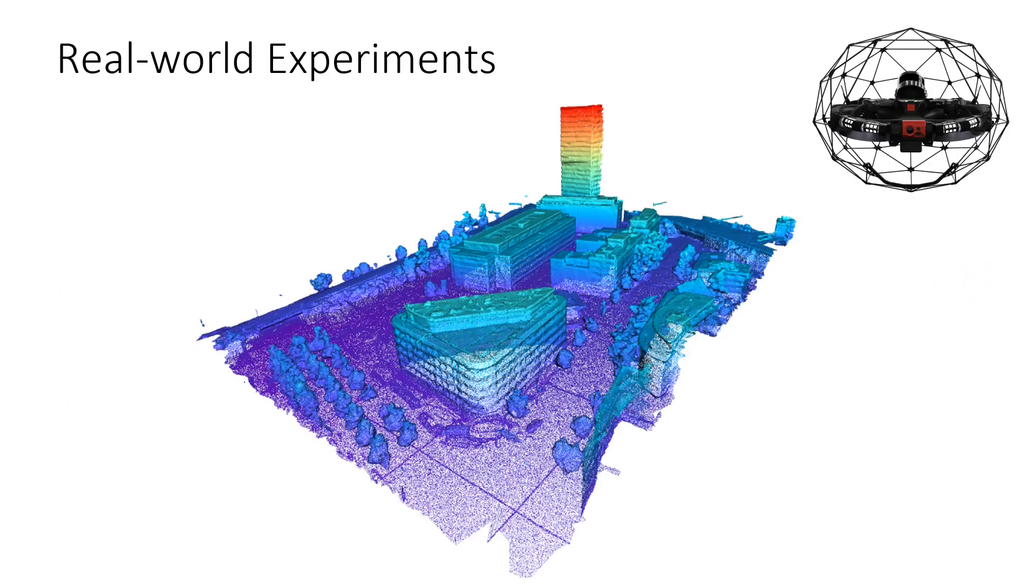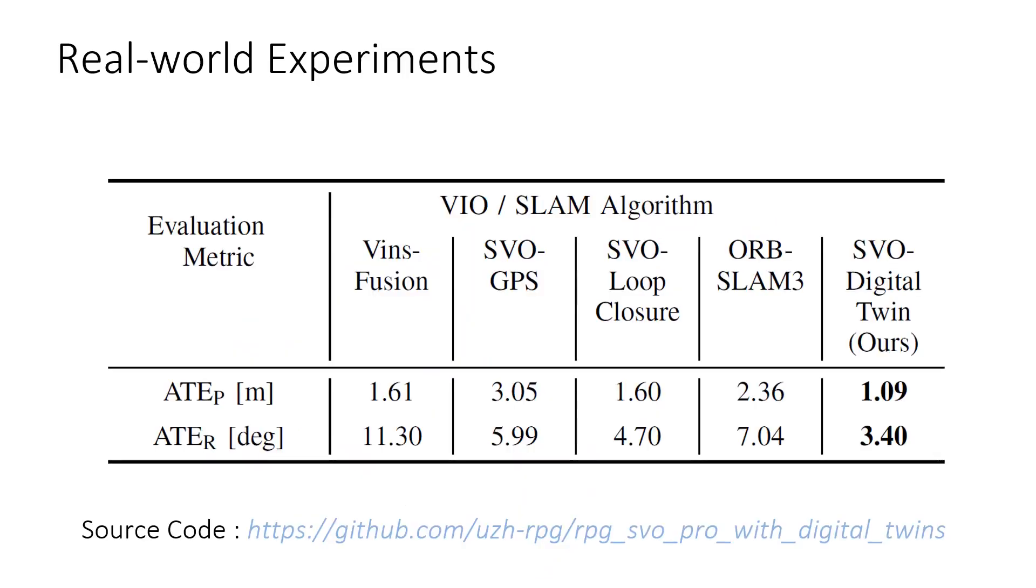In real-world experiments with data collected onboard a drone flying in a city, we show that our approach outperforms the state-of-the-art VIO GPS systems.